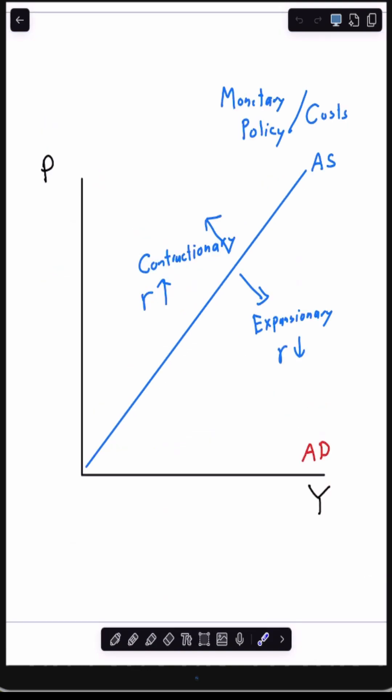Now if you're thinking about the ADAS curve in terms of monetary policy, the AS curve is what's moved by monetary policy where you can have contractionary policy which increases the interest rate or you can have expansionary policy which decreases the interest rate.